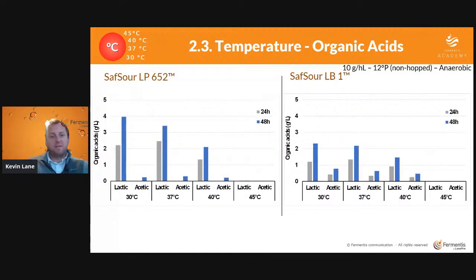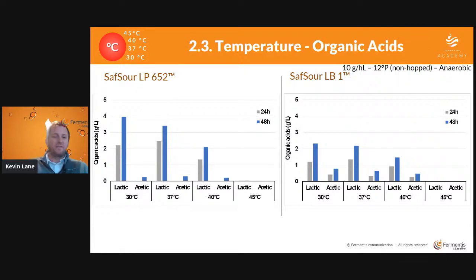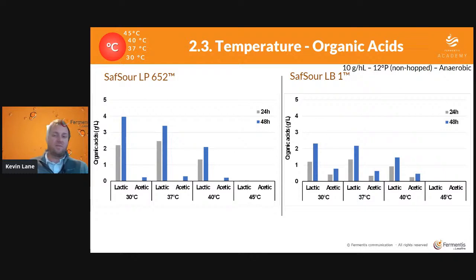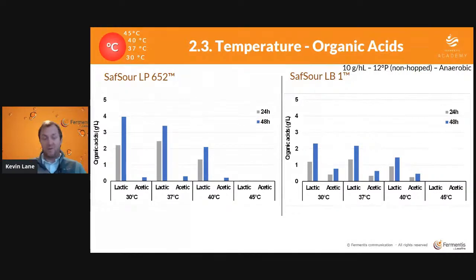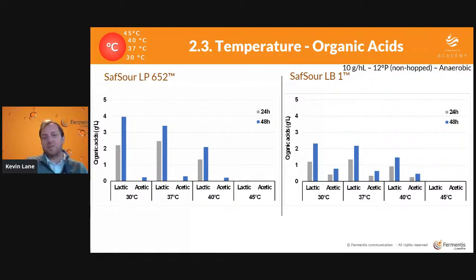Taking a look at the organic acids produced: the plantarum on the left shows very minimal acetic acid production. As you increase temperature, there's less acid produced at each temperature set point. Once you achieve 45°C, there's no acid produced even at the 48-hour mark. These are ways to control how much acid is being produced by the bacteria in a set amount of time.